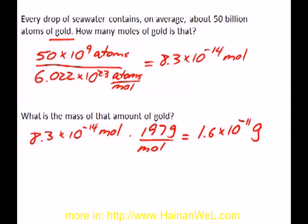So 50 billion atoms of gold has a mass of 1.6 times 10 to the negative 11 grams. Not a lot.